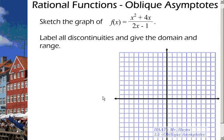Okay, hi guys. We're going to finish up this last section of 3.5 on graphing rational functions. The last part of this is going to be oblique asymptotes.